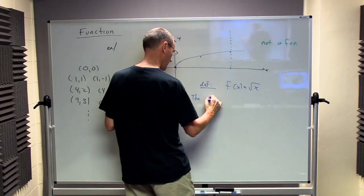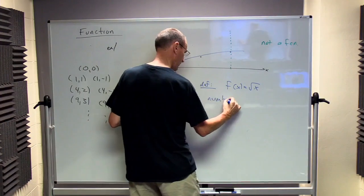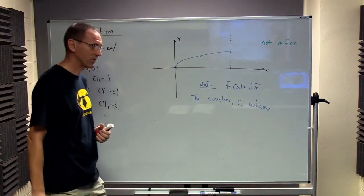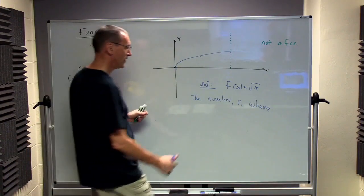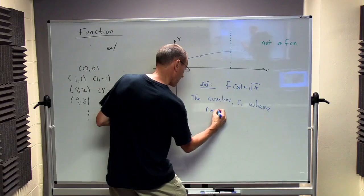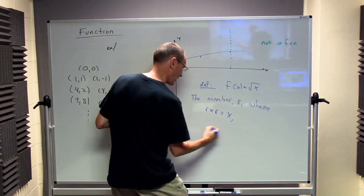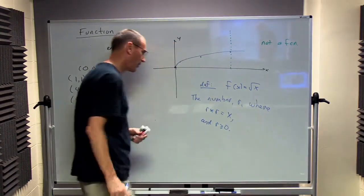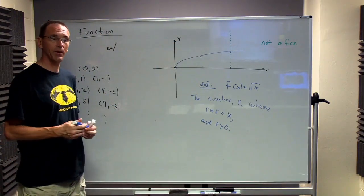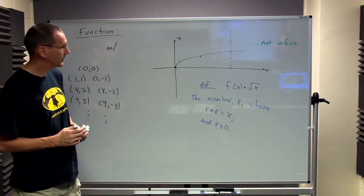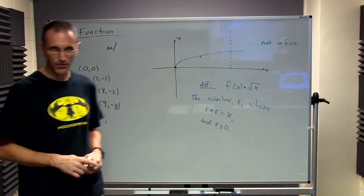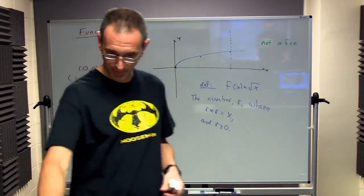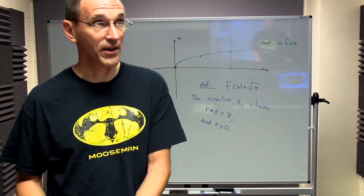So the written description of this is, we're going to do the same thing we had before. It's going to be some number R where R times R is equal to X and R has to be non-negative, has to be greater than or equal to 0. So that's how we're going to define the square root function. And now, again, this is a function. And it works nicely.